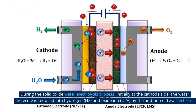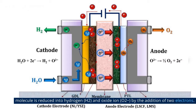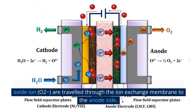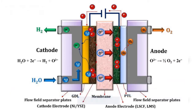During the solid oxide water electrolysis process, initially at the cathode side, the water molecule is reduced into hydrogen (H2) and oxide ion (O2-) by the addition of two electrons. The hydrogen is released from the cathodic surface and the remaining oxide ions, O2-, travel through the ion exchange membrane to the anode side.